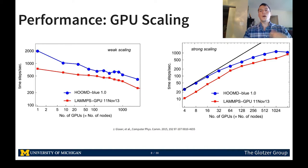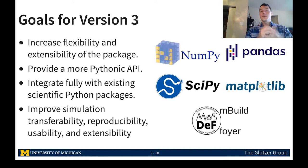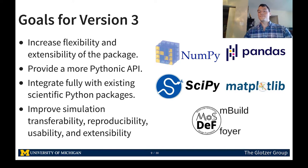Having shown HOOMD-Blue is performant, we'll go over the goals for version 3. Modern simulations need performance, which HOOMD-Blue already offers, but they also need customization and flexibility. Version 3 seeks to increase that flexibility, provide a more Pythonic API, and integrate more fully with existing scientific Python packages. We also wish to improve simulation transferability, reproducibility, usability, and extensibility — collectively known as "trueness," a term coined by MoSDeF, of which HOOMD-Blue is a part.